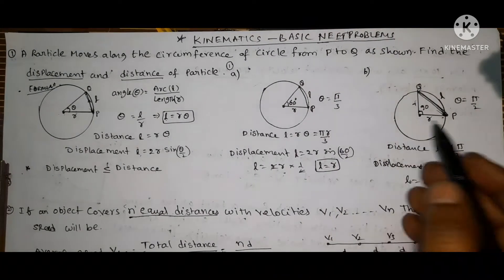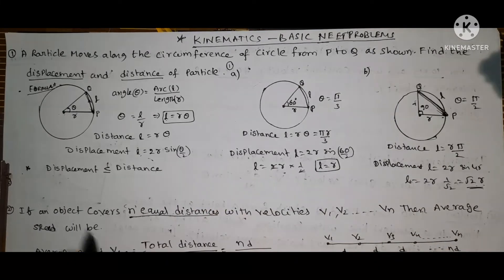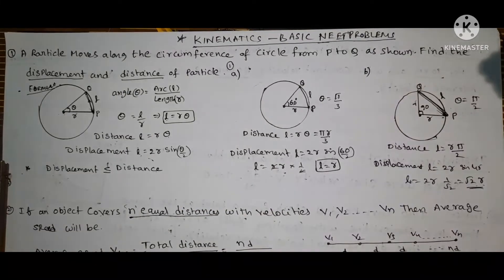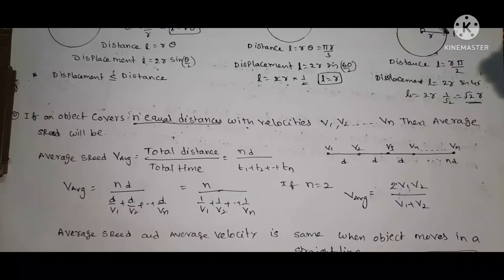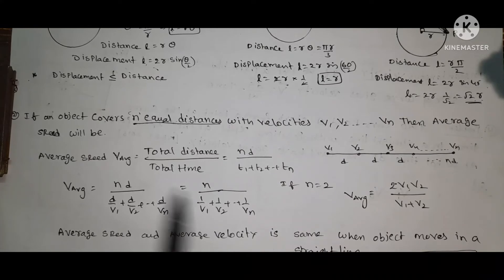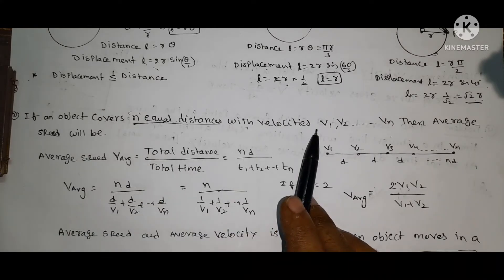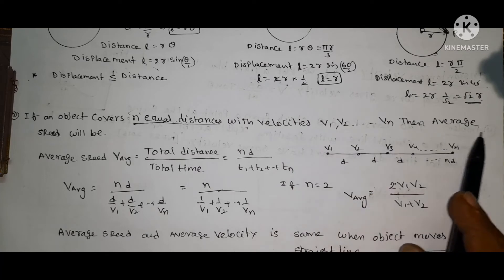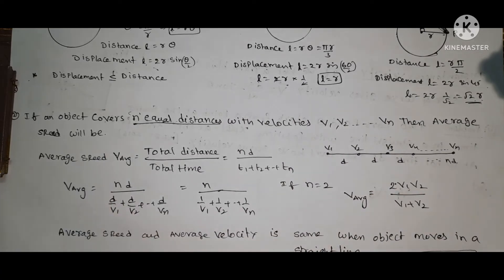Topic 2: if an object covers n equal distances with velocities V1, V2, ... Vn, then what is the average speed? The formula for average speed is total distance divided by total time.